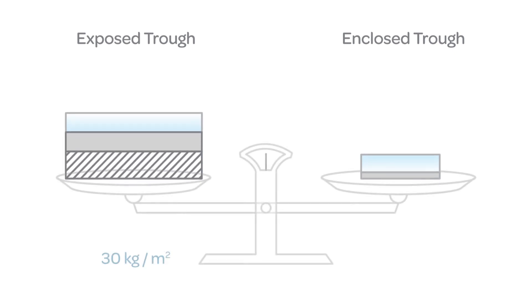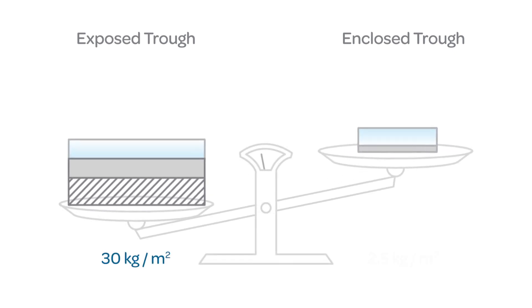A traditional outdoor trough, Euro trough would weigh about 30 kilograms per square meter of mirror and our system weighs less than five.